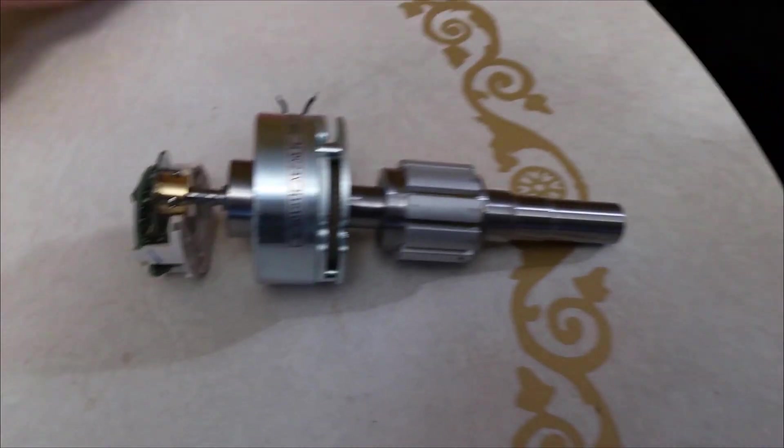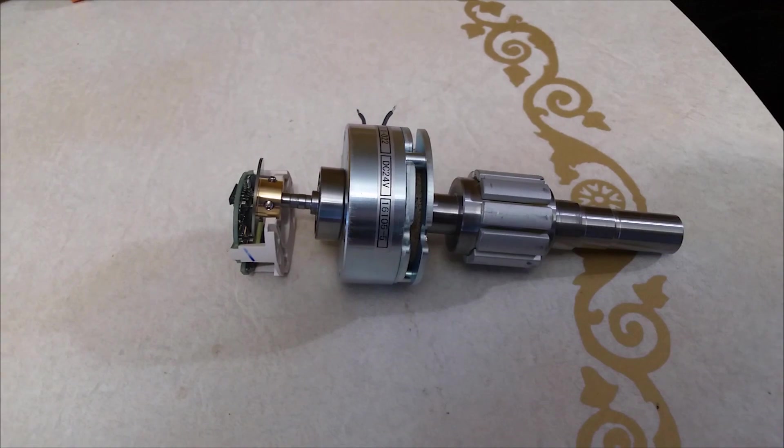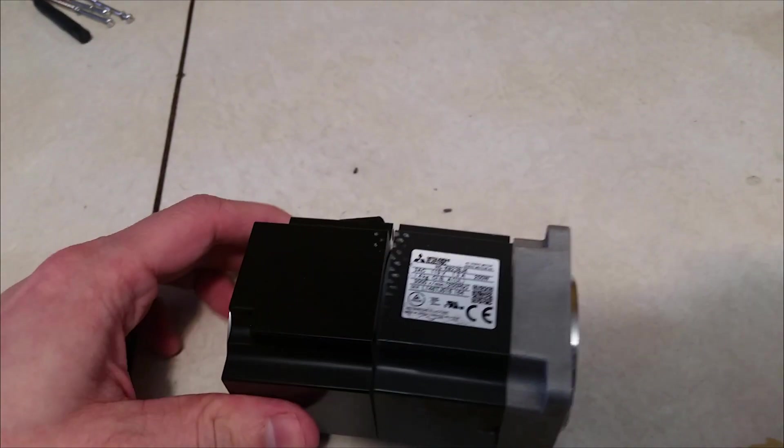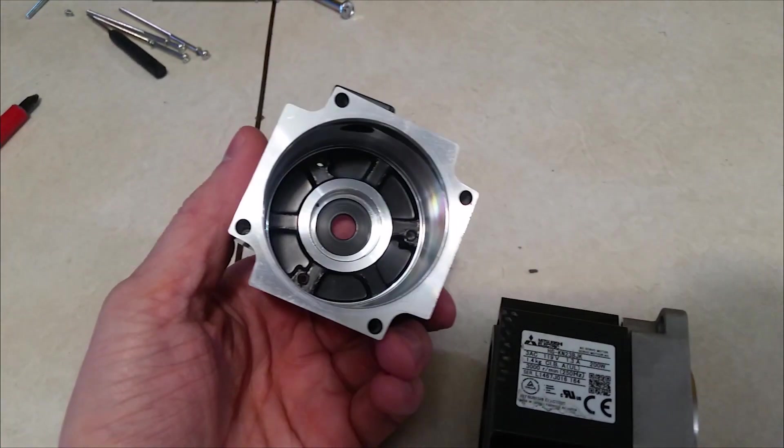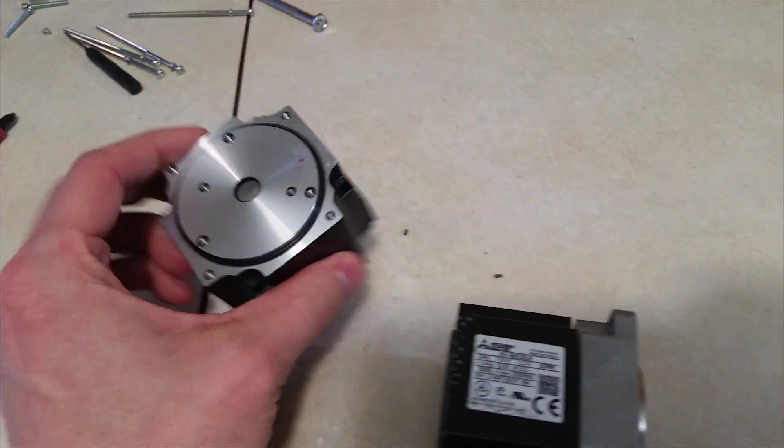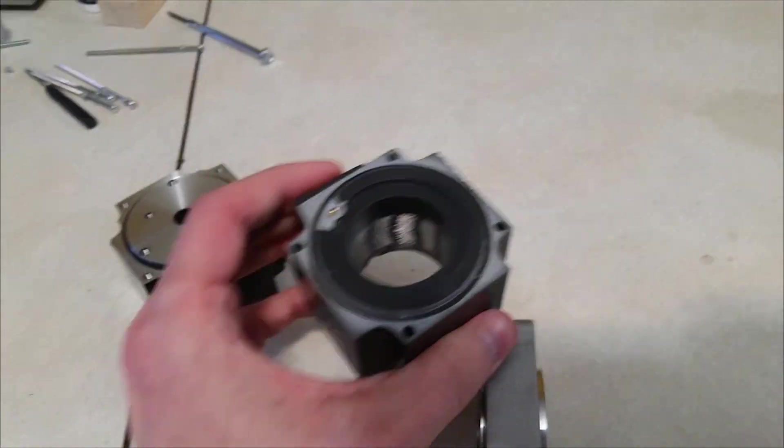So here are the guts of this motor. Let's take this apart and see what we got. So this top section, this is where the brake is. I'll explain that here in a second. And this is the power section.